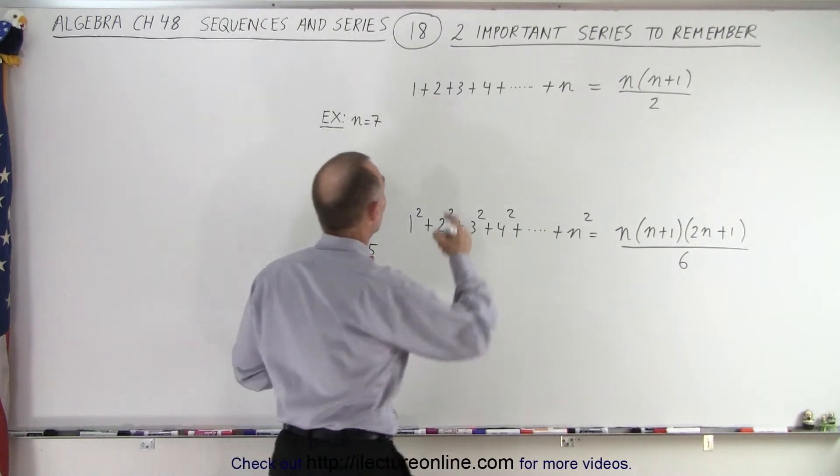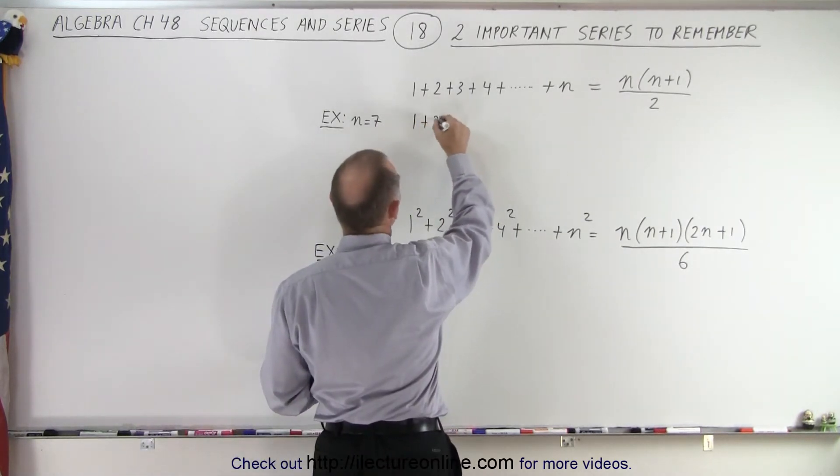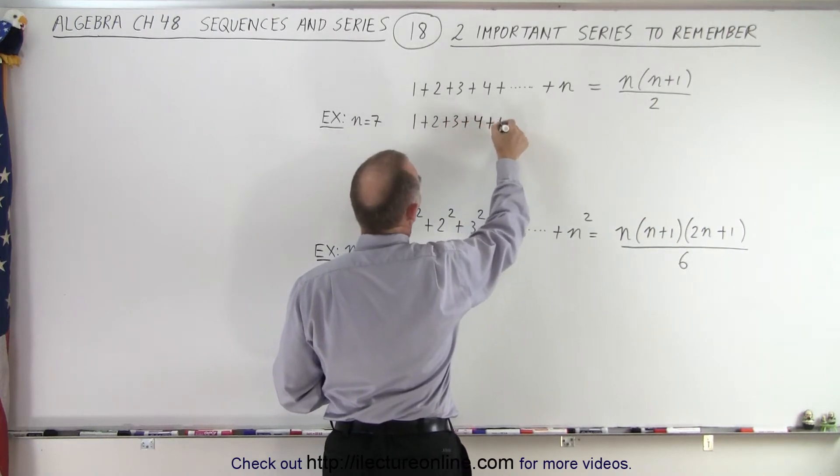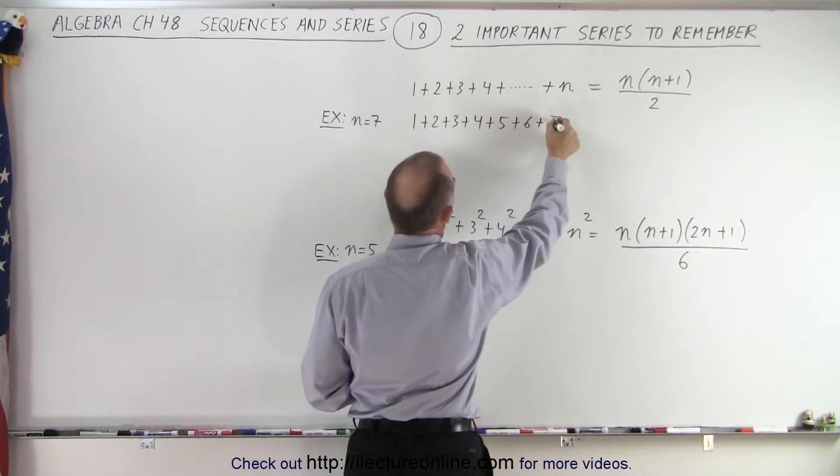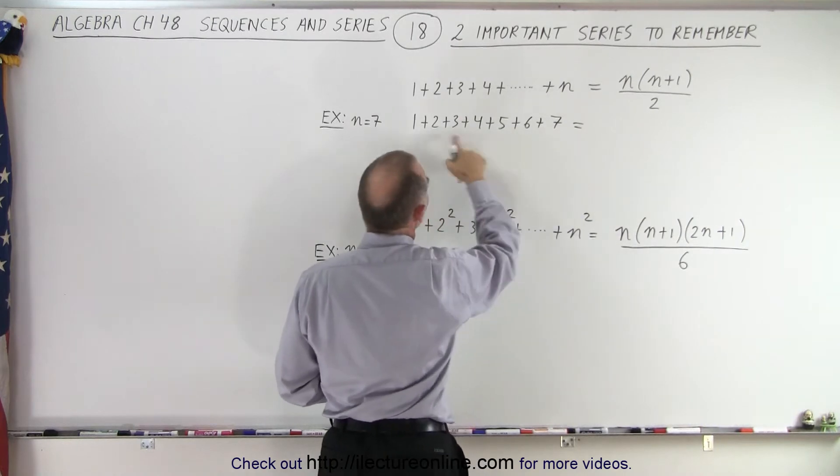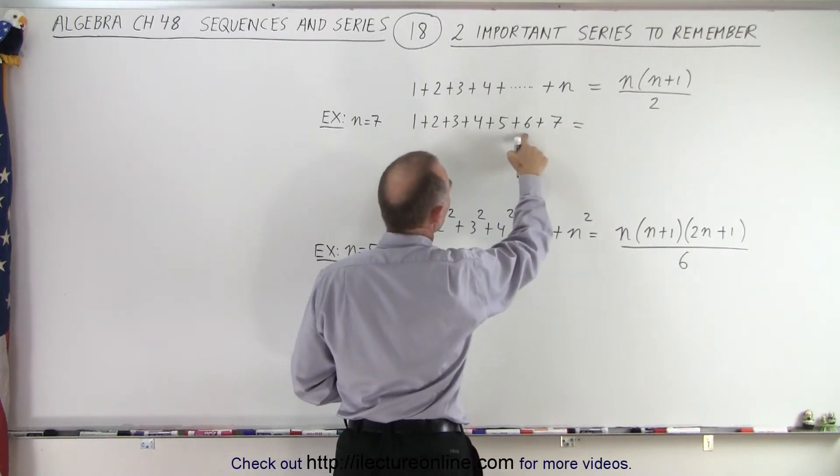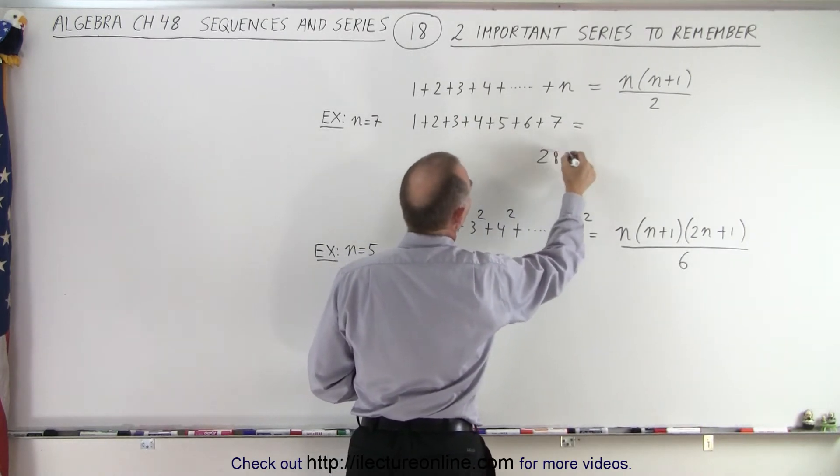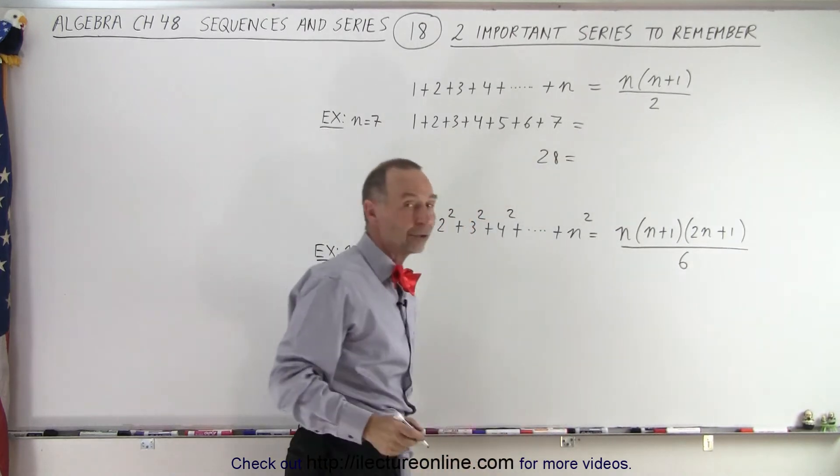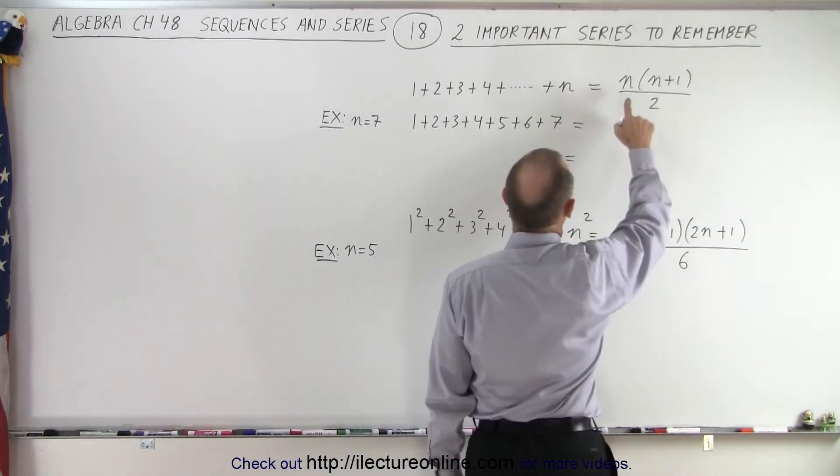On the left side we're going to write 1 plus 2 plus 3 plus 4 plus 5 plus 6 plus 7. And if we add that up, that's 10, that's 15, that's 21, that's 28. And that equals... well, let's see what we get on the right side.